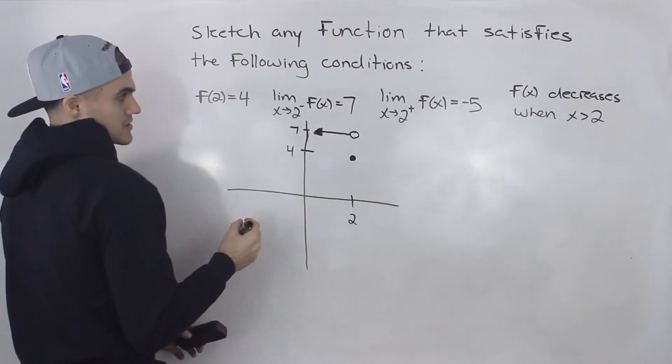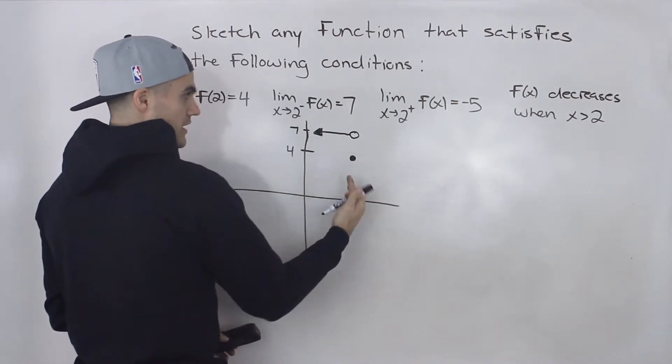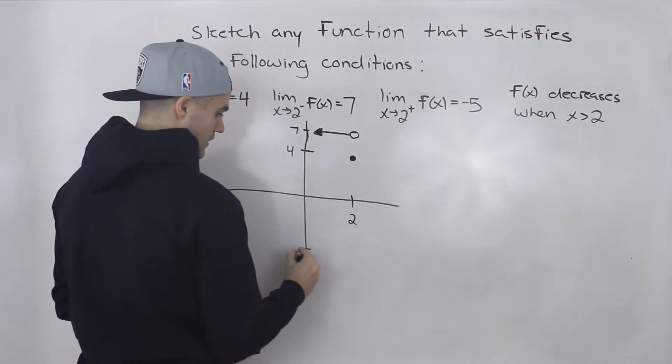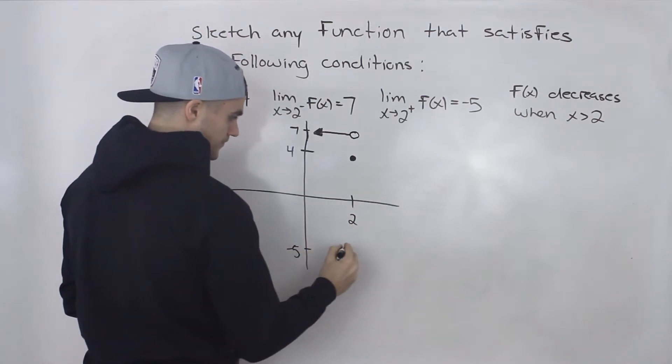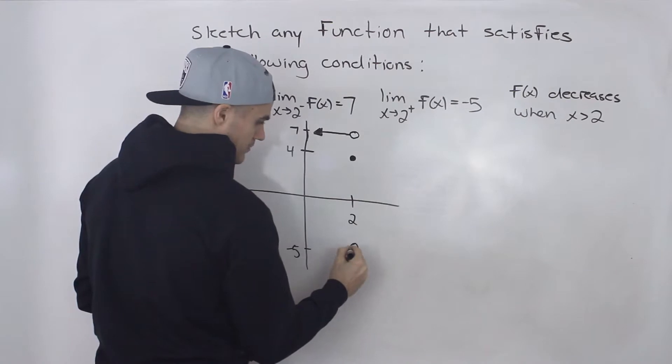And then the limit as x approaches 2 from the positive side is equal to negative 5. So negative 5 is going to be down here. And that's going to be a hole as well.